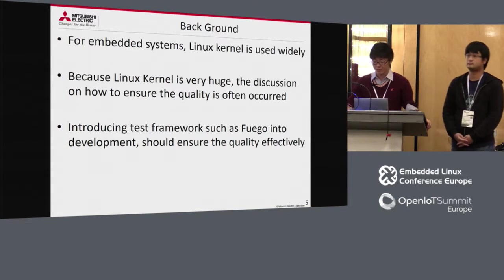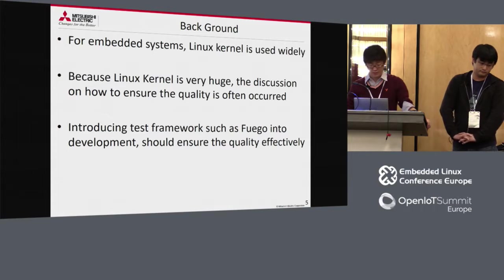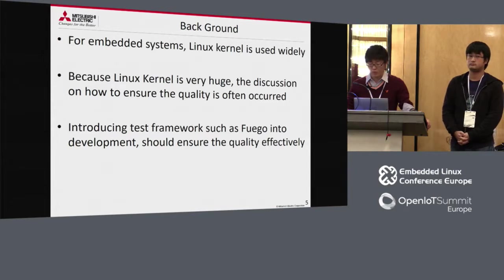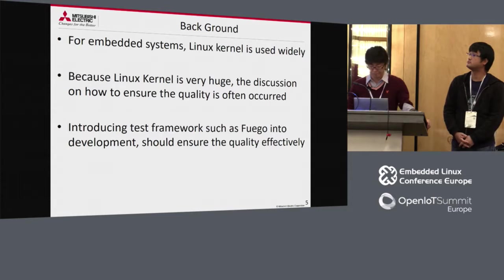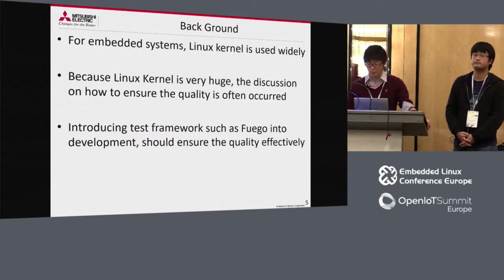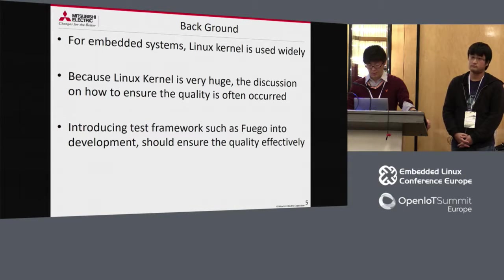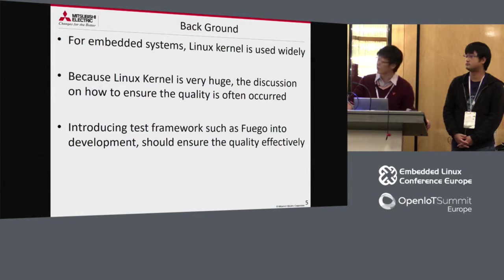Recently, as you know, Linux is used widely for embedded systems. We sometimes have concerns about quality when considering kernel testing for product development, because the Linux kernel is very large. Discussion about how to ensure quality occurs often. So we are trying to address this problem using an automated test environment. For this environment, we introduce a test framework such as Fuego into our development. I believe this should be effective. Today, we'd like to share some tips from our experience.